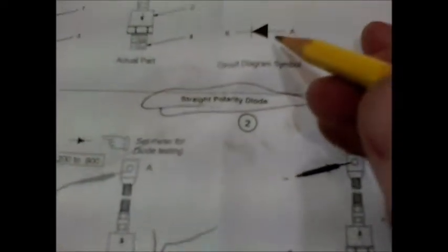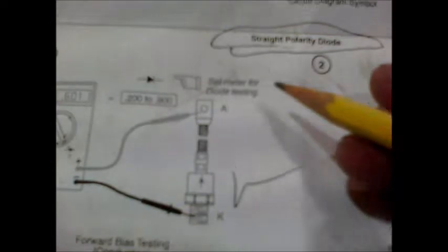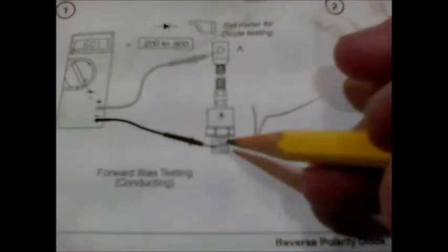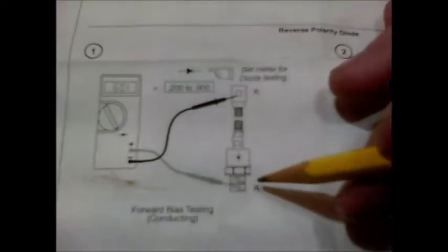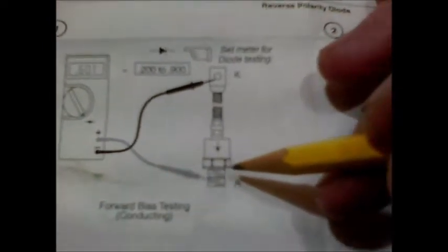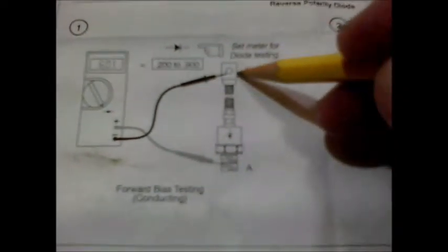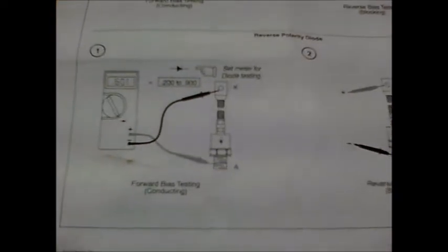But for a straight polarity diode, the little arrow symbol is pointing towards the base. Okay, that's a straight polarity diode. A reverse polarity diode, the little arrow is pointing towards the top, or pointing towards the lead up here. That's a reverse polarity diode. I hope this is picking up.